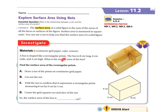A box is shaped like a rectangular prism. The box is 8 centimeters long, 6 centimeters wide, and 4 centimeters high. What is the surface area of the box? First we're going to draw a net of the prism on centimeter grid paper, cut it out to confirm it's correct, then fold the net to confirm it represents the rectangular prism measuring 8 by 6 by 4 centimeters, and then count the grid squares.